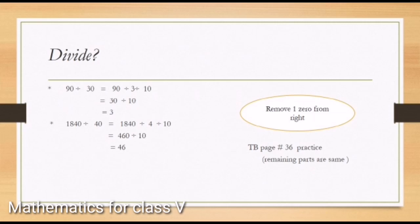We have two examples from textbook page 36 as practice questions. Question: 90 divided by 30 equals 90 divided by 3 divided by 10. We split 30 into 3 and 10. First, 90 divided by 3 equals 30. Then we divide by 10, removing one zero from the right side, and the answer is 3.